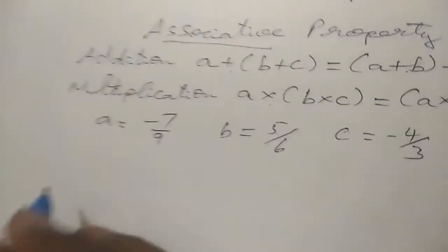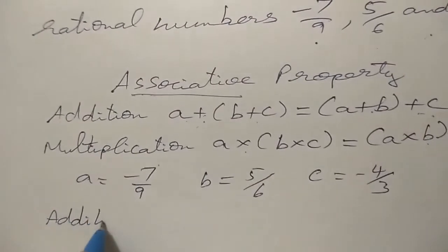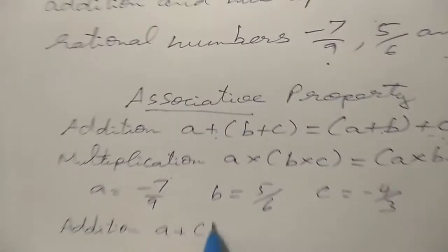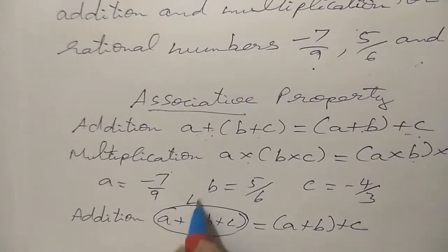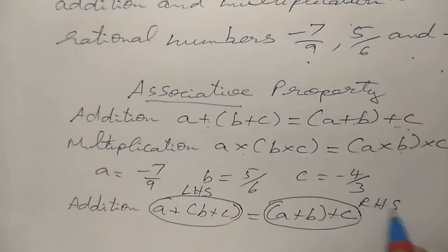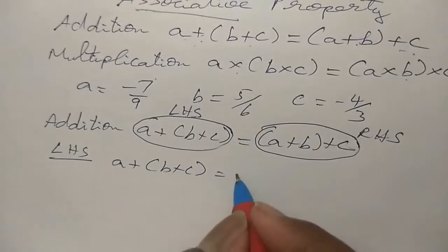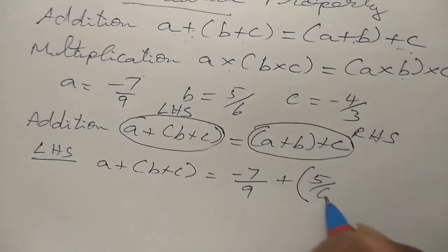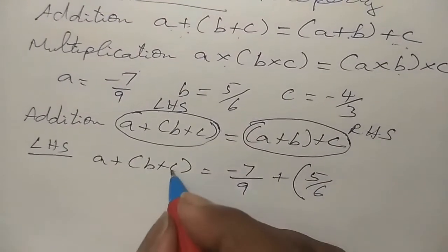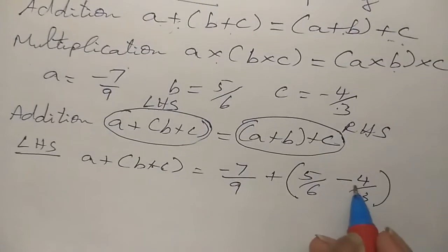For multiplication, the property is: a into (b into c) equals (a into b) into c — just shift the brackets. Now for addition, we take a plus (b plus c) as the left hand side and (a plus b) plus c as the right hand side. Left hand side: a plus (b plus c) equals minus 1 by 9 plus (5 by 6 plus minus 4 by 3). We write it as minus 1 by 9 plus (5 by 6 minus 4 by 3). First solve inside the bracket.